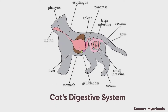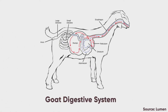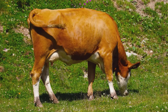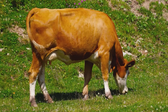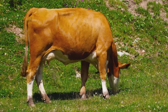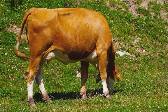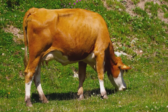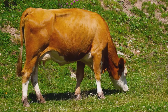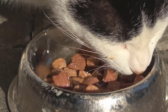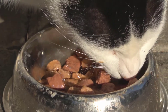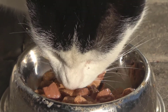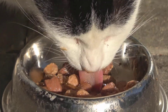The digestive system of any animal is modified to digest the food they eat. For example, cows eat grass, that means its mouth, stomach and intestine is built in such a way that it can easily digest that grass. On the other hand, cat eats meat, so its mouth, stomach and intestine is built to digest meat easily.